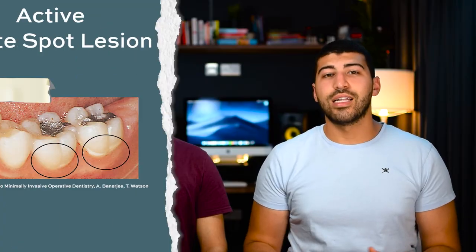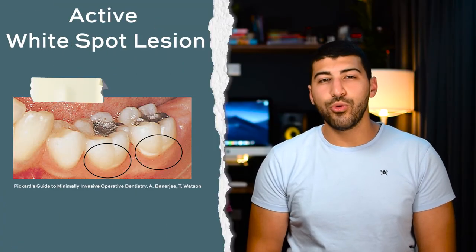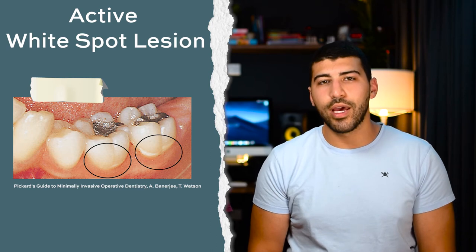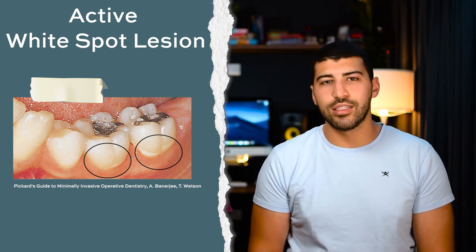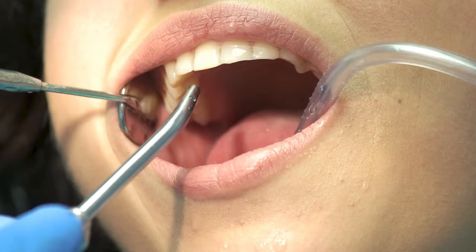Caries can start as an active white spot lesion, and these look smooth, frosty, opaque and non-cavitated, and they're detected more easily when air dried with a three-in-one syringe.